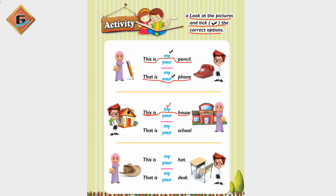The next one is 'That is my or your school?' Because the friend is in front and she is standing near the school, we are talking to her, so the answer is 'That is your school.' We tick 'your'. Next, the girl is standing with a hat, so this hat belongs to the girl.